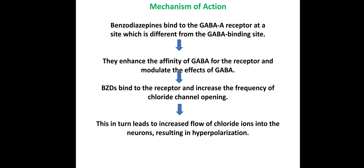Regarding the mechanism: benzodiazepines bind to the GABA receptor and enhance the affinity of GABA for the receptor, making it easier to attract. They increase the frequency of chloride channel opening. This causes hyperpolarization, which produces an inhibitory effect.